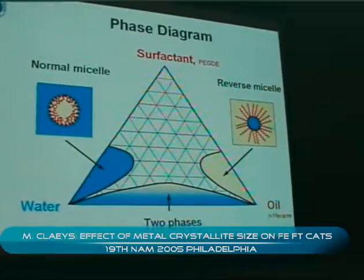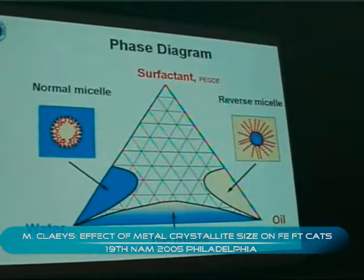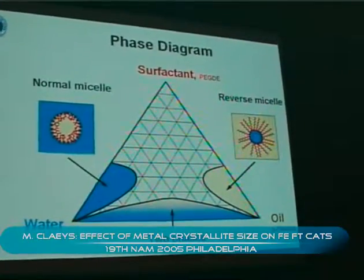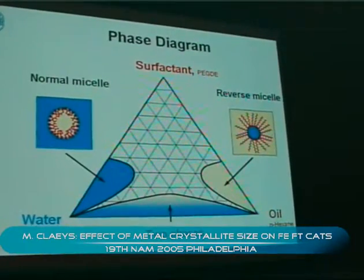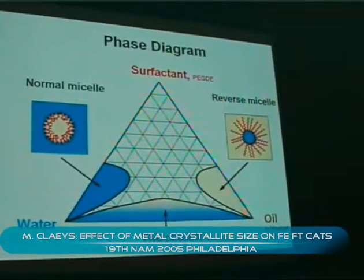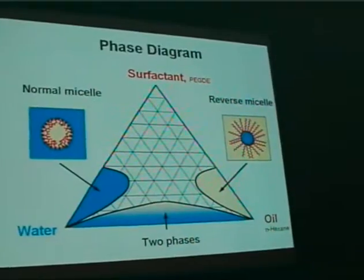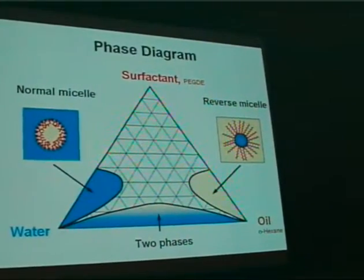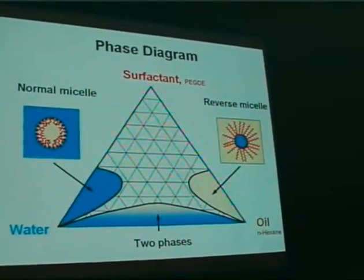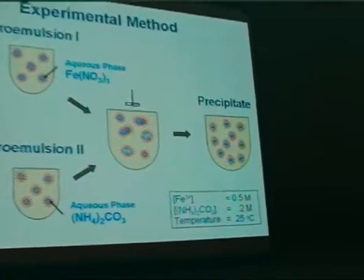We use water; the oil in our case is n-hexane throughout our study, and a non-ionic surfactant, pentaethylene glycol dodecyl ether. It is known that just by changing the composition of these three components, we can dial the size of the reverse micelle, and we intend to use this reverse micelle as a reaction vessel where we manufacture our nanoparticles.